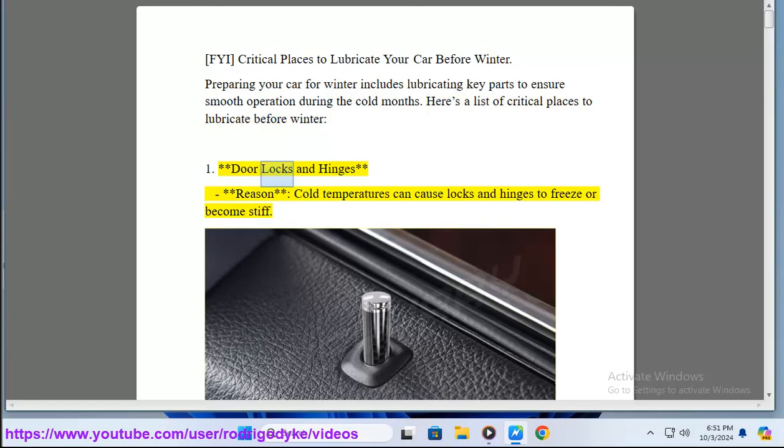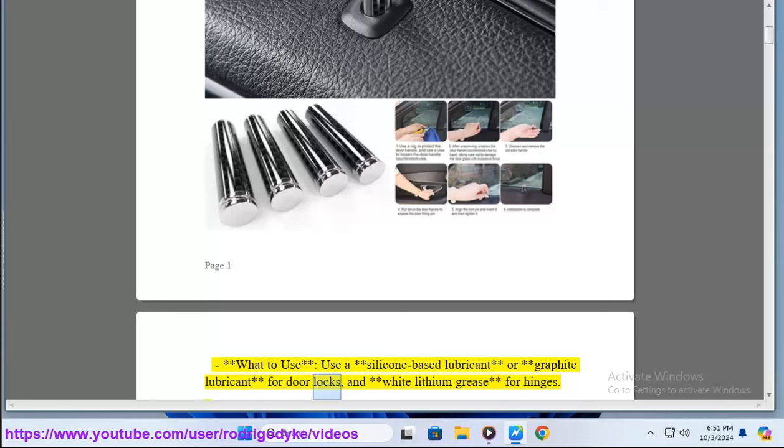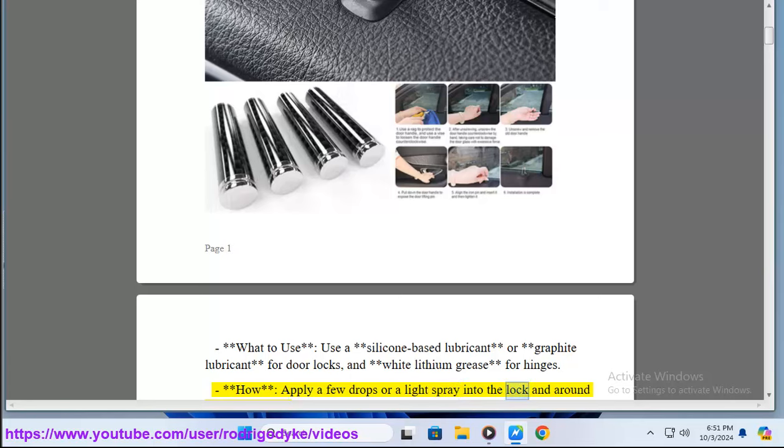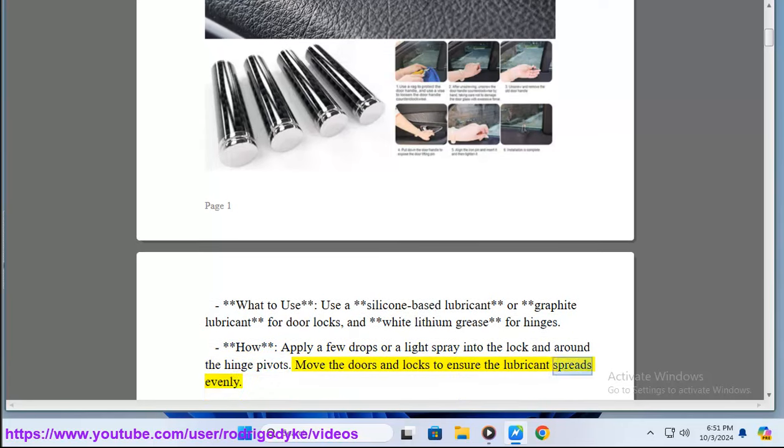1. Door Locks and Hinges. Cold temperatures can cause locks and hinges to freeze or become stiff. What to use? Use a silicone-based lubricant or graphite lubricant for door locks, and white lithium grease for hinges. How? Apply a few drops or a light spray into the lock and around the hinge pivots. Move the doors and locks to ensure the lubricant spreads evenly.